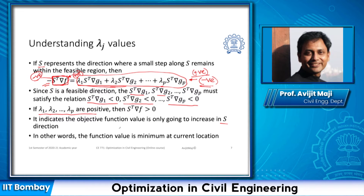This is going to happen only when we are already at the maximum point or at a point where the function value is maximum. In that case we can say if all the lambda values are negative for the active constraints then we have reached the maximum point or where the function value is going to be maximum. We are going to explain this further through an example.